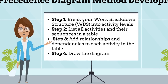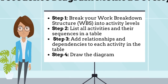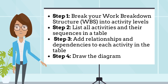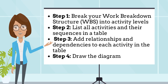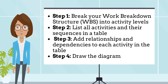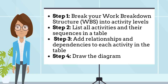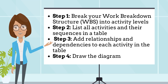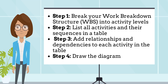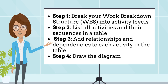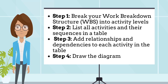There are four steps associated with developing a precedence diagram method. Step 1: break your work breakdown structure, WBS, into activity levels. Step 2: list all activities and their sequences in a table. Step 3: add relationships and dependencies to each activity in the table. And finally, step 4: draw the diagram.